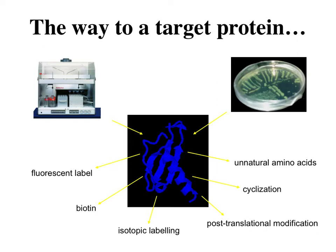We've discussed ways to make proteins from chemical methods as well as recombinantly, but in order to target proteins and explore them, it'd be nice to be able to label them either through fluorescent labels, biotinylation, isotopic labeling, add post-translational modifications, cyclizations, and unnatural amino acids.